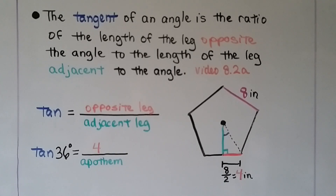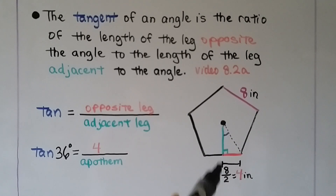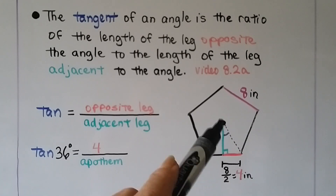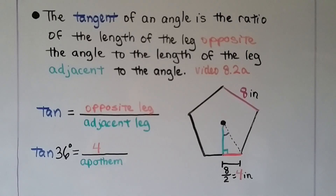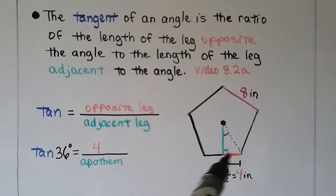For those who need a reminder, we did tangent ratios back in video 8.2a. The tangent of an angle is the ratio of the length of the leg opposite the angle to the length of the leg adjacent to the angle. That's how we got tangent of 36 degrees equals four over the apothem.